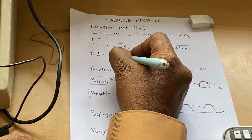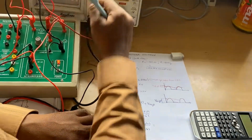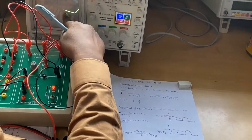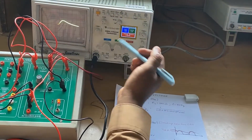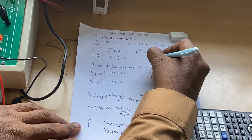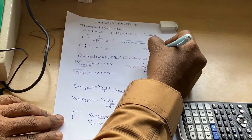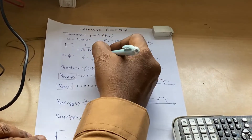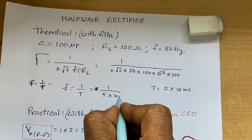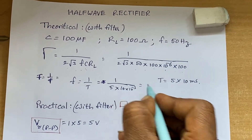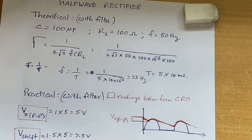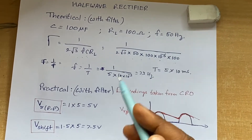To calculate the exact frequency, use f = 1/T. Observe the time period on the CRO — from one peak to the next is 5 divisions. So time period T = 5 × 10 ms = 50 ms = 50 × 10⁻³ s. Substituting into f = 1/T gives approximately 20 Hz; you may get around 33 Hz depending on your readings. Calculate the frequency value this way as well. Thank you very much.